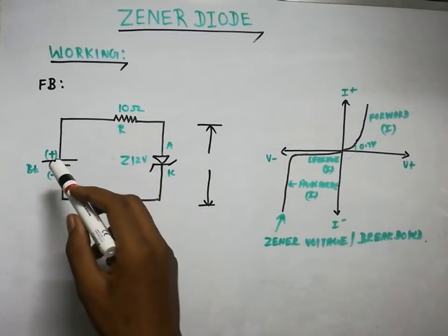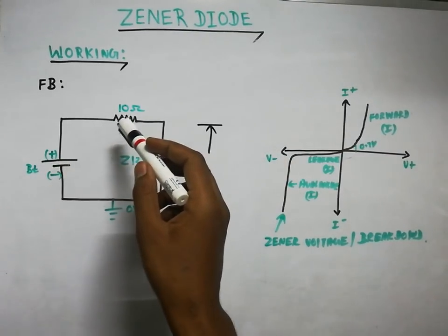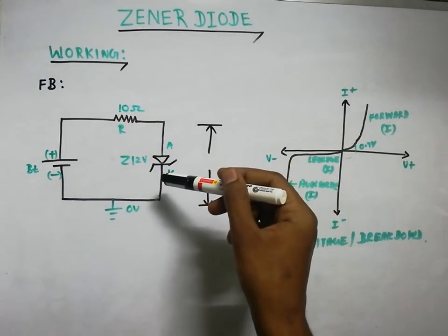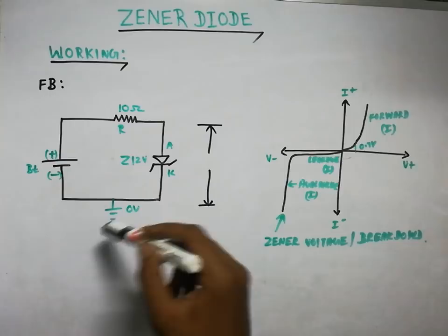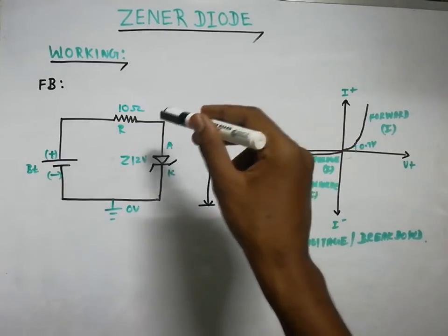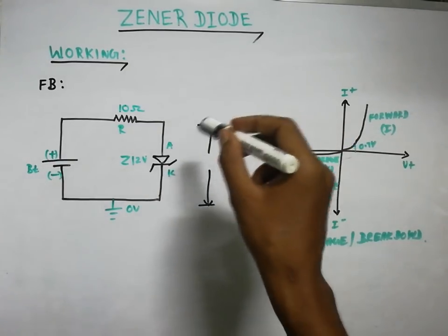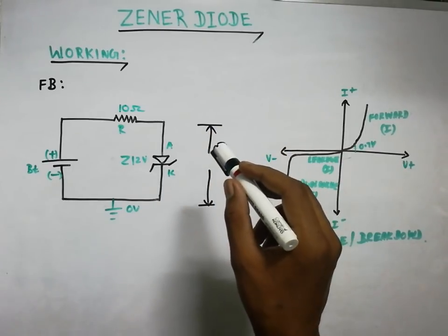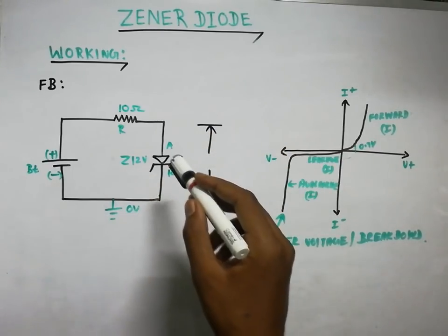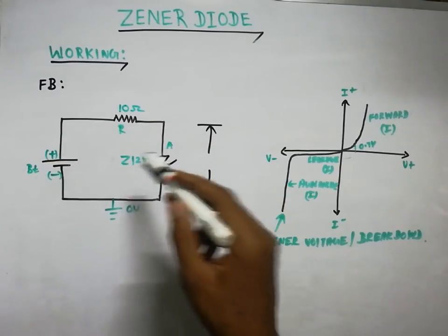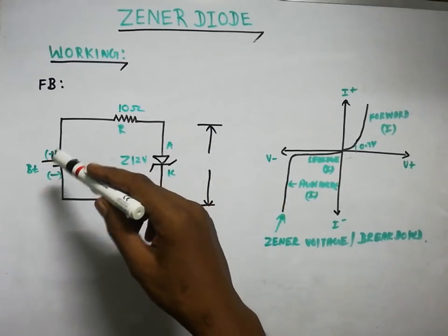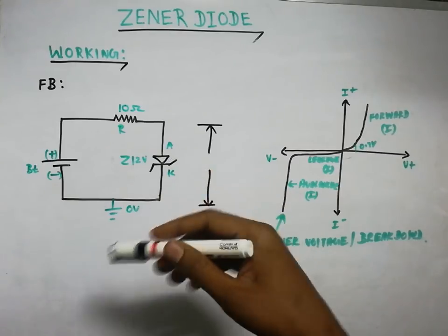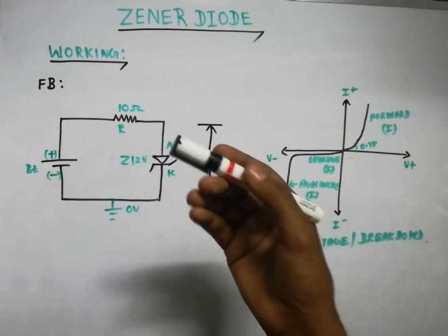Now let's look at the circuit. We have a battery, a 10-ohm resistor, and finally a Zener diode connected to ground. We have a potential difference — that is the supply voltage. We will check whether the diode is in forward bias: battery positive connects to the anode and battery negative connects to the cathode. Let's see what the reaction is.